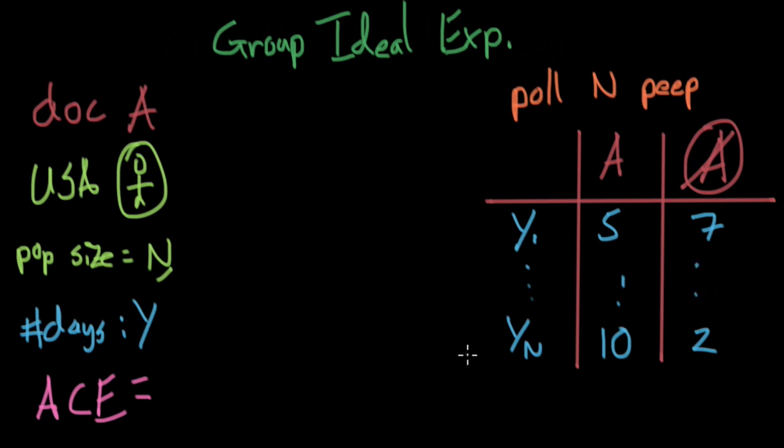To figure out the average causal effect, we take the average of the A column - the treated column - and we call this Y sub A. People will call this Y sub A bar, putting a little bar above the Y.